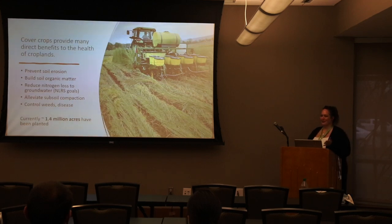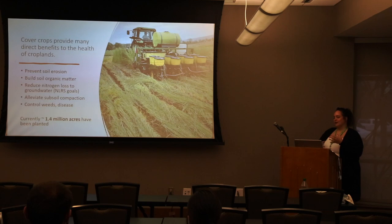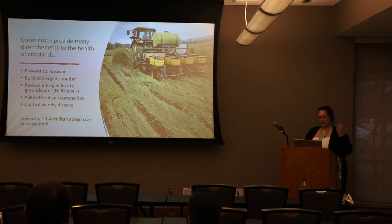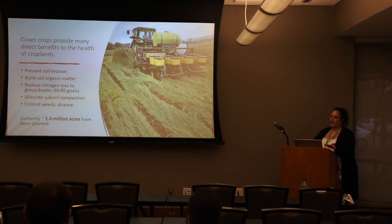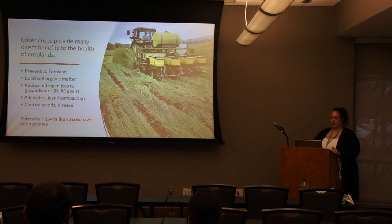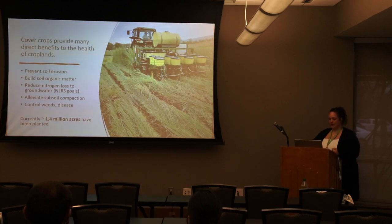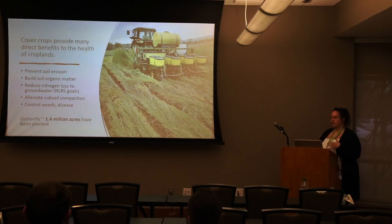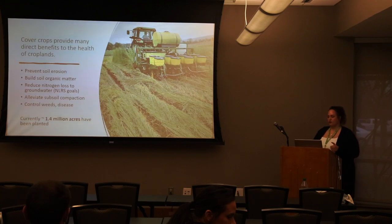Cover crops have a ton of benefits to farmlands. These include preventing soil erosion, helping to build organic matter in the soil as decomposing carbon adds to soil organic matter, reducing nitrogen loss to groundwater — important in Illinois under the nutrient loss reduction strategy — and oilseed radish with deep tap roots can alleviate subsoil compaction. Brassica cover crops also help control weeds and disease through production of compounds called glucosinolates.